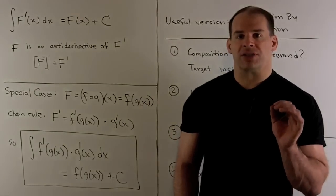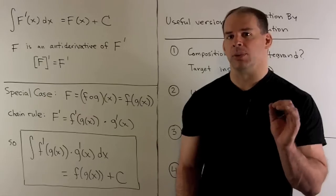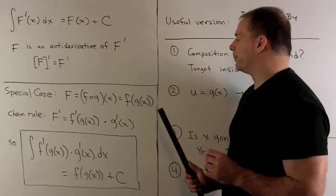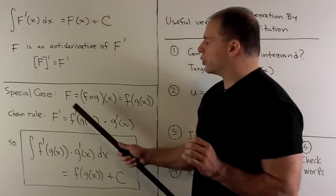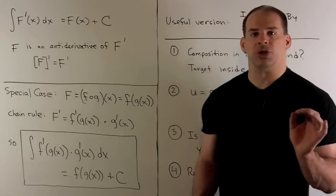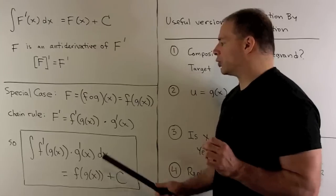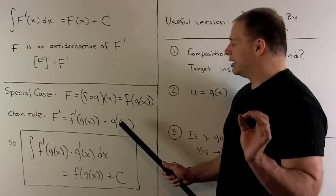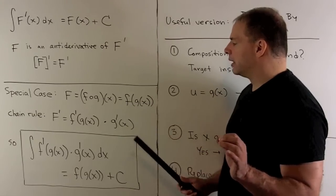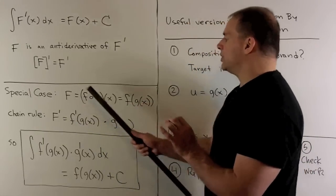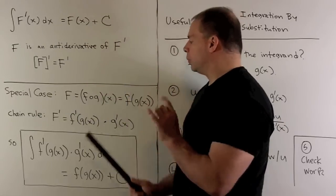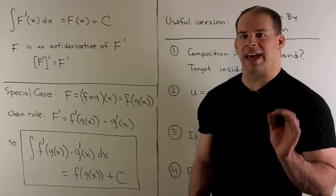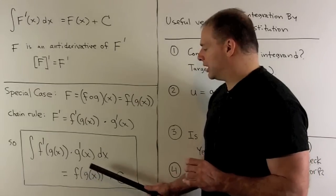For integration by substitution, we're going to want capital F to be equal to a composition of two functions — little f composed with g of x. To take the derivative of this composition, we use the chain rule: derivative of the outside, so F prime evaluated at g of x, times the inside g prime of x. Putting these back into our first equation gives us the identity: the indefinite integral of F prime on g of x times g prime of x dx equals f on g of x plus a constant.